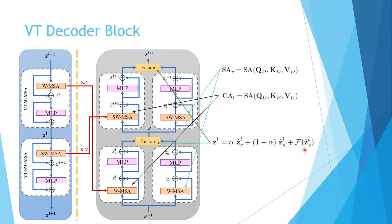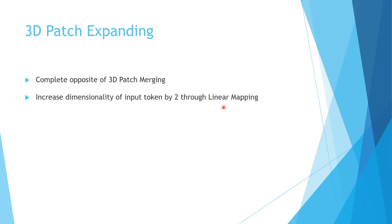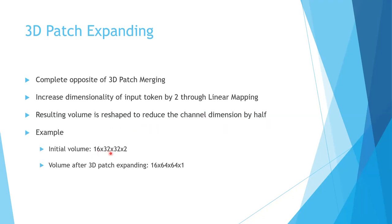The F here represents the Fourier feature positional encoding, where position information is encoded using a set of learnable Fourier features representing input positions as a function of frequency. The authors don't go into much detail about why it is only used in the decoder and not the encoder. Every decoder block is followed by a 3D patch expansion block, which is the complete opposite of 3D patch merging: it increases the dimensionality of the input token by two through linear mapping and the resulting volume is reshaped to reduce the channel dimension by half. For example, 16×32×32×2 becomes 16×64×64×1 — height and width increase by a factor of two while the channel dimension decreases by a factor of two.